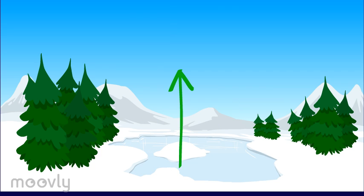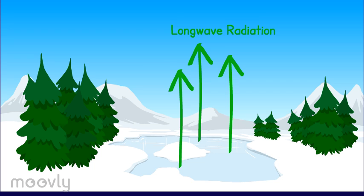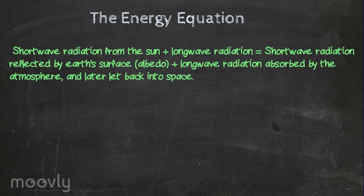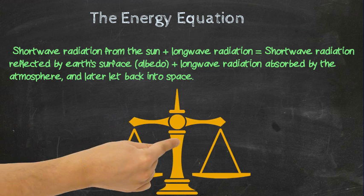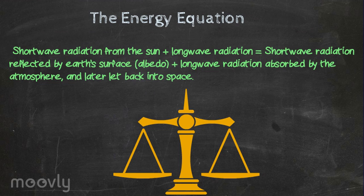The radiation absorbed by the surface is then re-radiated back into the atmosphere as long-wave radiation. This process is the makings of the greenhouse effect in the energy balance equation. The energy equation is as follows: short-wave radiation from the sun plus long-wave radiation equals short-wave radiation reflected by Earth's surface (albedo) plus long-wave radiation absorbed by the atmosphere. This equation must be equal in order for the Earth's energy system to be functioning.